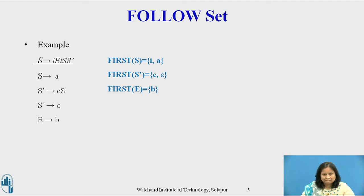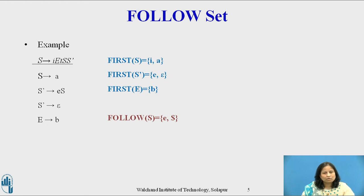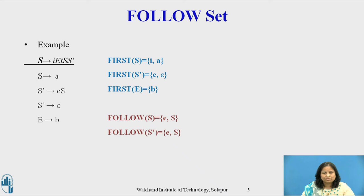Since in S derives i E t S S', S' derives epsilon, by Rule 2 everything other than epsilon in the first of S' must be placed in the follow of S. Hence, follow(S) equals {e, dollar}. By Rule 3 applied to the production S derives i E t S S', e and dollar are also in the follow of S'. Hence, follow(S') equals {e, dollar}.